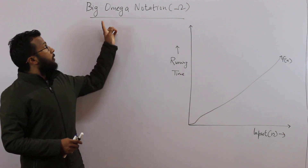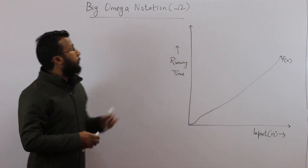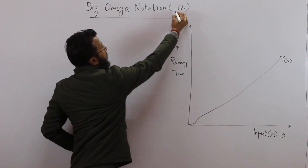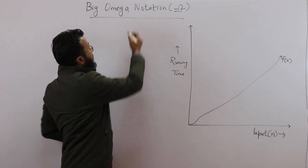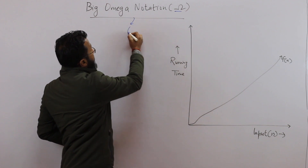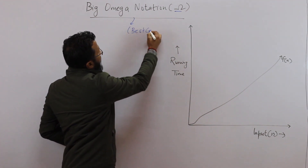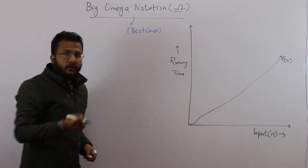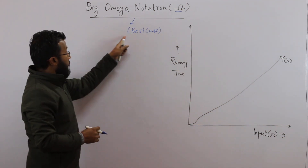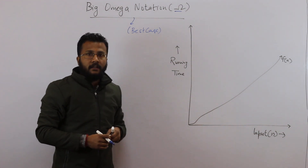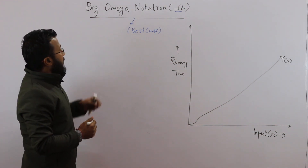Now let us talk about Big Omega notation. Big Omega notation is represented by Omega, and it corresponds to the best case of an algorithm. Big O corresponds to the worst case, and Big Omega corresponds to the best case time complexity of an algorithm.